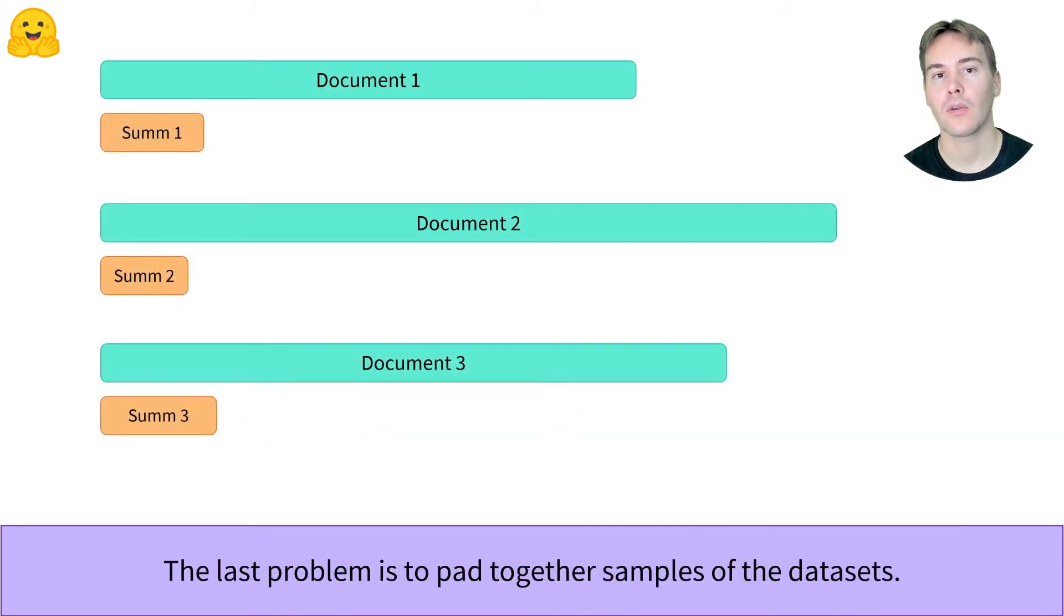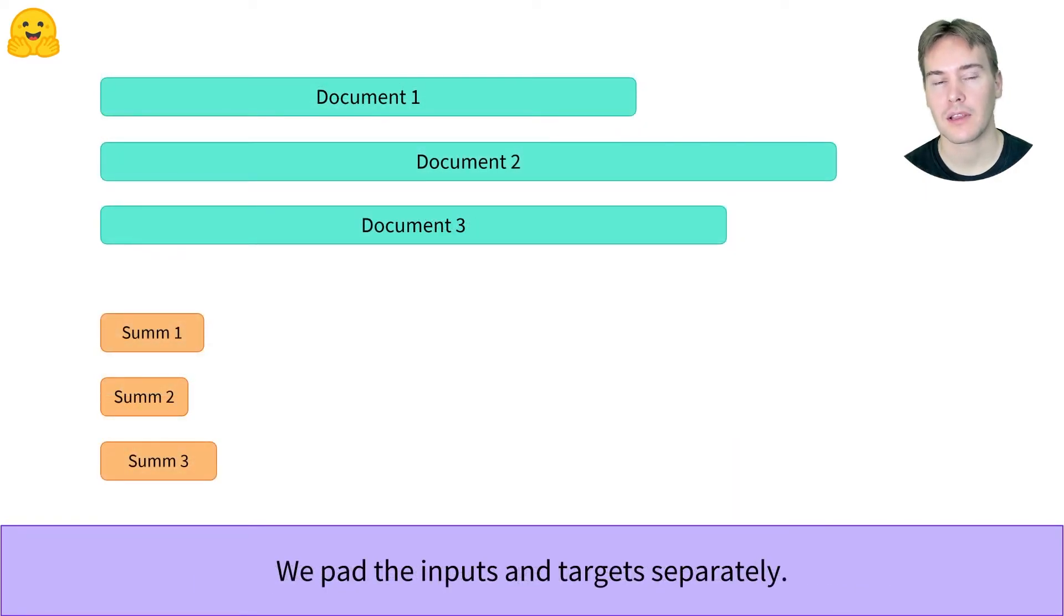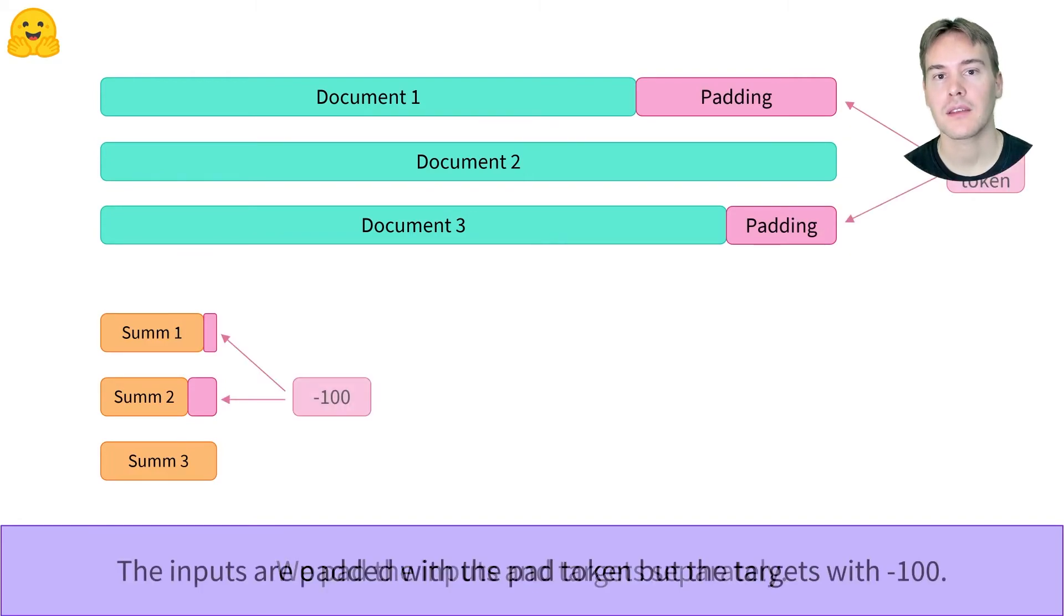Your inputs and targets are all sentences of various lengths. We'll pad the inputs and targets separately, as the maximum lengths of the inputs and targets are completely different. Then we pad the inputs to the maximum length among the inputs, and same for the targets. We pad the inputs with the pad token and the targets with the minus 100 index, to make sure they are not taken into account in the loss computation.